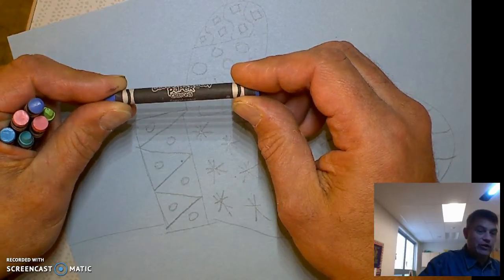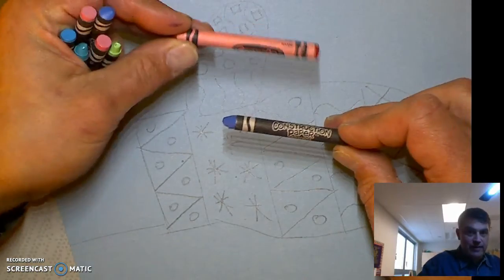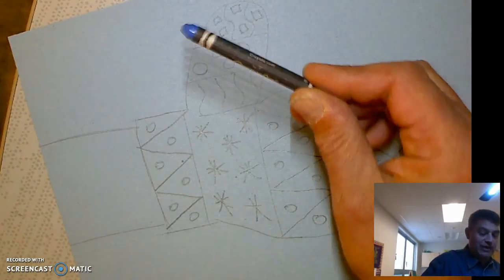And they have black labels, so you'll know if you have the right one. If you have a label that's the color of the crayon like this one, it won't work. So you've got to use the ones with the black labels.